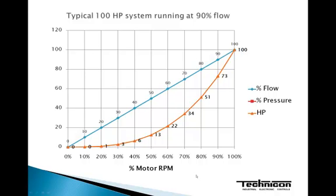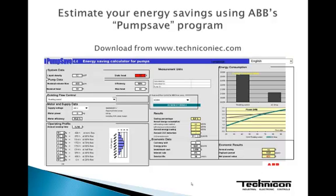So this is the way energy can be saved in the system. How much energy can you save in your system? There's an easy way to estimate it, and that's using ABB's Pump Save program. This program can be downloaded from the TechniconIEC.com website. Look under the Technical and Engineering Data tab, download the program, punch in your own values, and see for yourself how much energy you can save.